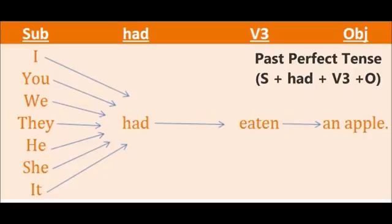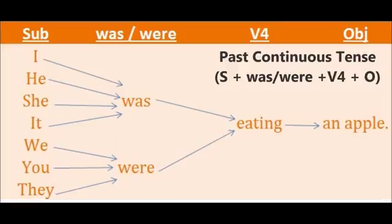The next tense in the past is past continuous tense. The structure is subject plus was or were plus V4 plus object. We have two helping verbs: 'was' and 'were'. Was is used by the subjects I, he, she, it in the past. Were is used by the subjects we, you, they. Was is for singular subjects and were is for plural subjects. For example: I was eating an apple, we were eating an apple, he was eating an apple, you were eating an apple, she was eating an apple, they were eating an apple.